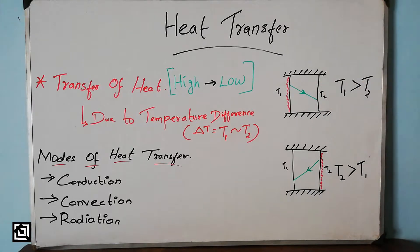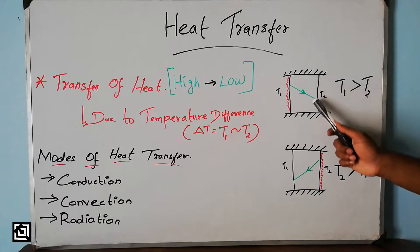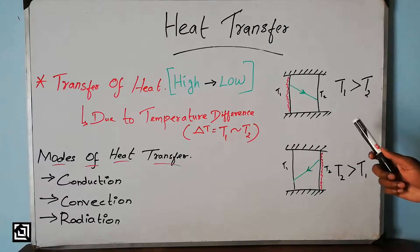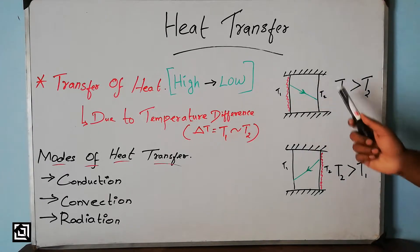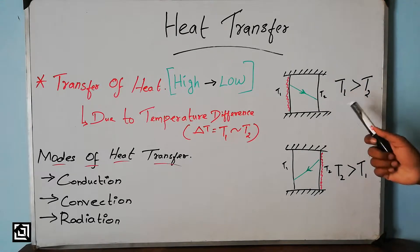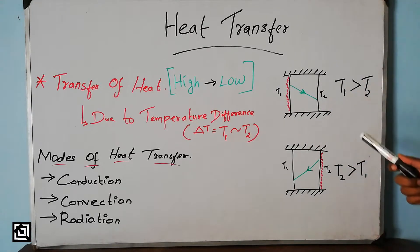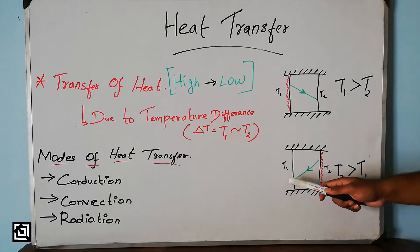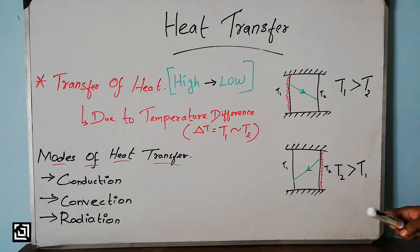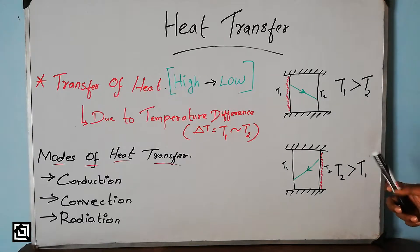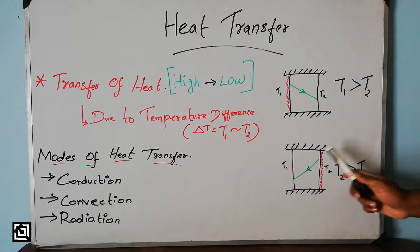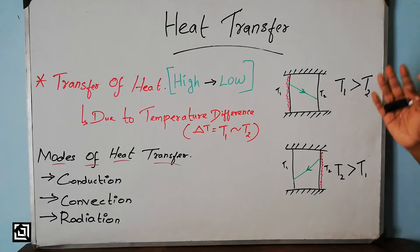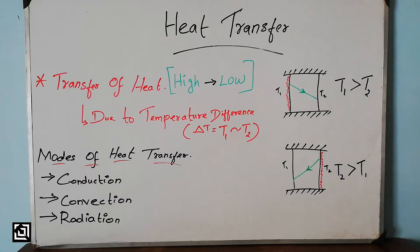Let's talk about an example. In case 1, T1 is the high temperature side and T2 is the low temperature side. Heat transfer occurs from T1 to T2. When the temperature outside is more than the temperature inside, heat transfers inward.